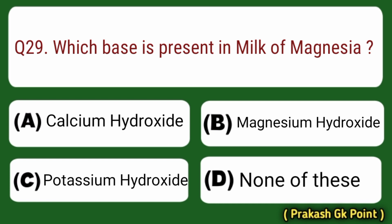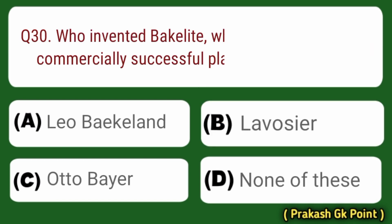Next question: which base is present in milk of magnesia? Answer: Option B — Magnesium Hydroxide.